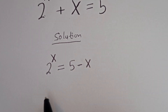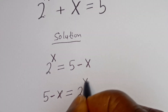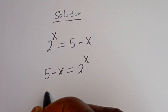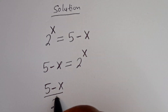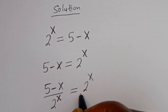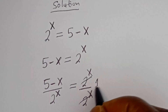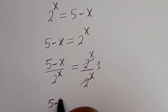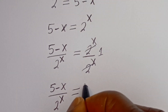This is the same thing as 5 minus x is equal to 2 to the power of x. Now let's divide both sides by 2 to the power of x. We have 5 minus x divided by 2 to the power of x is equal to 2 to the power of x divided by 2 to the power of x. This will cancel, giving us 1. Then we have 5 minus x divided by 2 to the power of x is equal to 1.